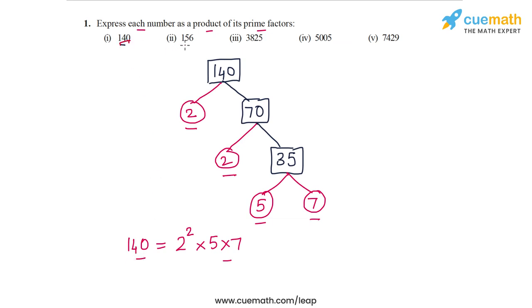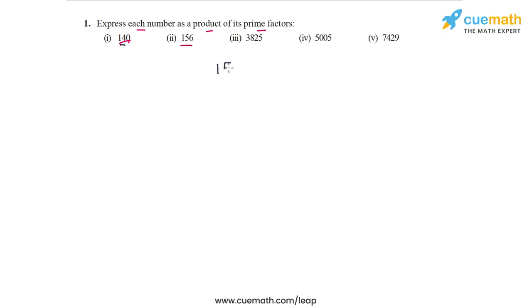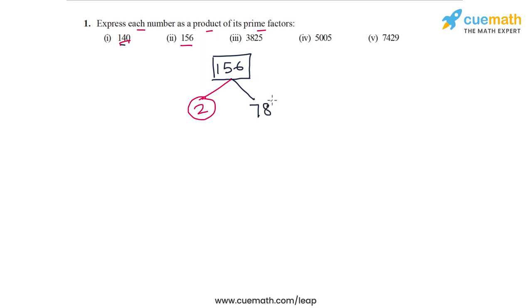Now let's do the prime factorization of part 2, the number 156. Since 156 is even, let's take out a factor of 2. Dividing 156 by 2 leaves us with 78. Since 78 is again even, we take out a factor of 2 again, leaving us with 39.